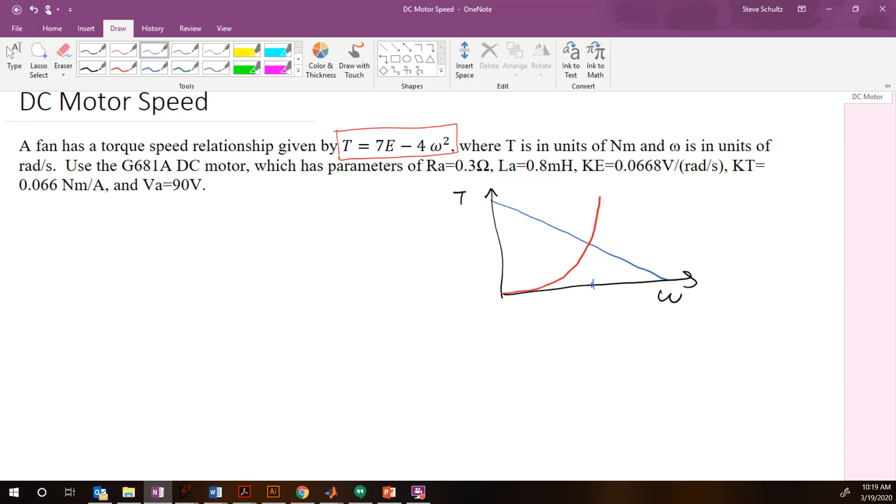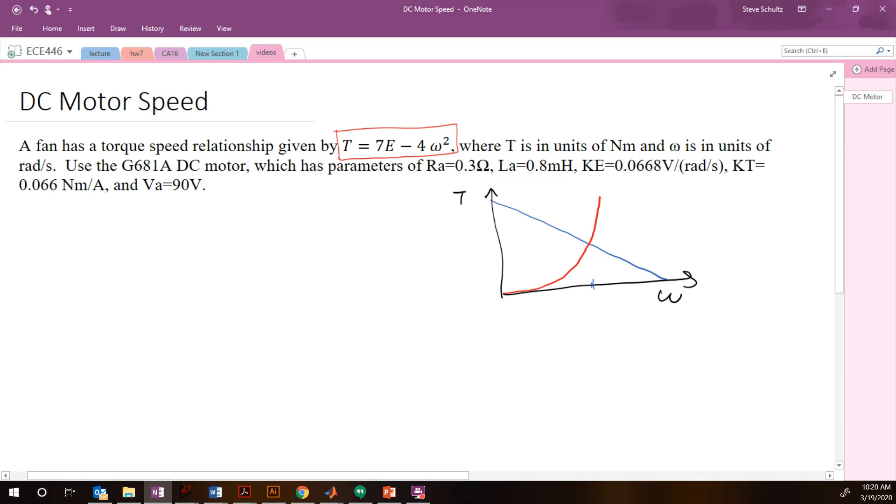So we're going to start by drawing our equivalent circuit of our motor. So this is our 90 volts, this is our RA which is 0.3 Ω. This is going to be slow enough that we don't really have to worry about our inductance. And then we have our back emf, so this is going to be 0.0668 volts per radian per second.